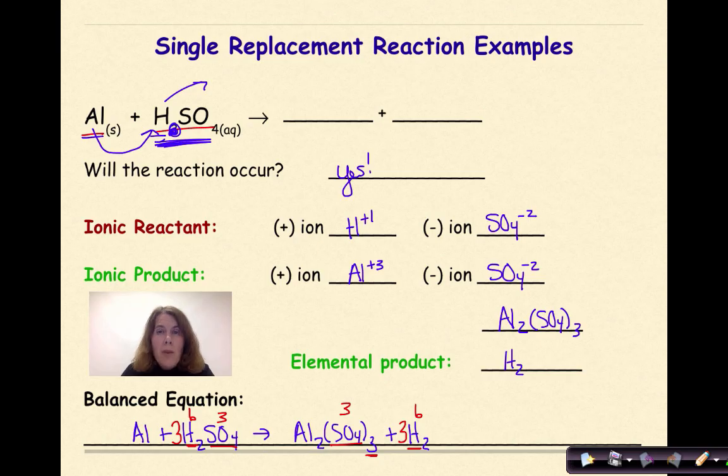Finally we have to look at the aluminum. On my product side I have two aluminum here and so I need to put a coefficient of two here. And now, thank goodness, I have two AL plus three H2SO4 yields AL2SO4 3 plus 3H2 and I have a balanced equation.